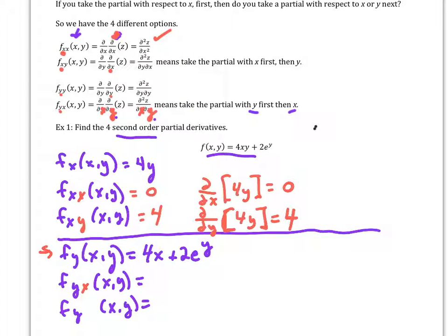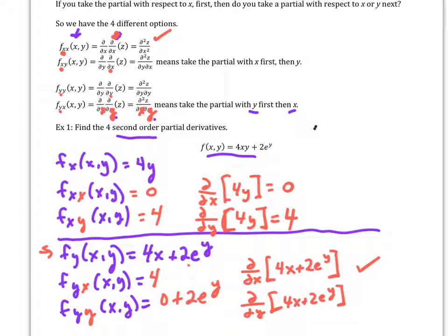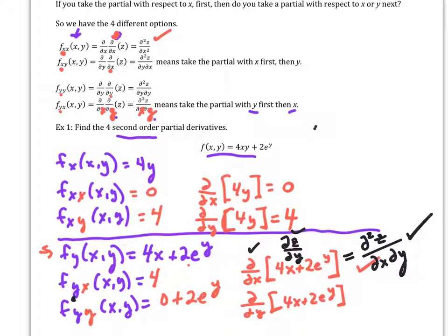Try the next one doing y first then x second, and then y second. Doing y first then x second: I take this with respect to x and get four; this part gives zero. Then doing y then y: I get zero plus 2e^y. In this notation, we take the partial with respect to x of the partial z with respect to y. Notice it's kind of backwards — this is y first — so just make sure you understand that notation.